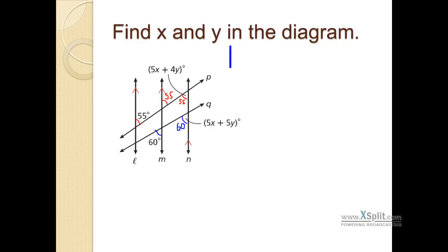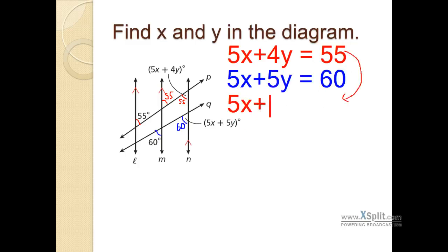We can write a couple of equations then to relate these together. In the red here, we can write 5x plus 4y is equal to 55. As we know, this angle is equal to 55. In the blue, we can go ahead and write 5x plus 5y is equal to 60. Now I'm going to choose to put this equation underneath, and I'm going to explain why in just a moment here. 5x plus 4y is equal to 55, and I'm just going to kind of cross out this top equation for a moment.